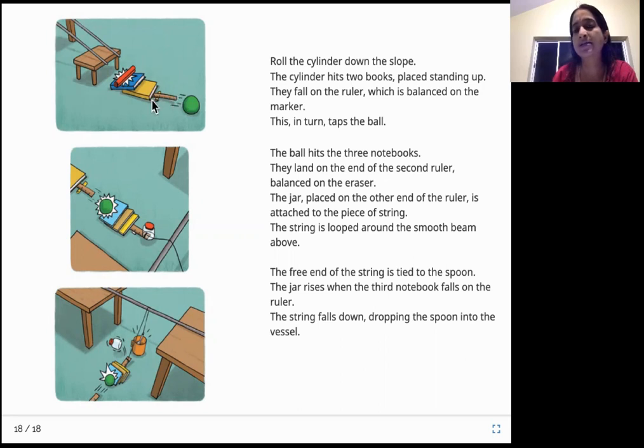What will it fall on? Fall on a ruler. Ruler is a scale. How is the scale placed? It's like a seesaw. Underneath is a marker. So when the book falls on one end of the ruler, the other end has the ball. So the ball will fall down and start rolling. And the ball will go hit the series of notebooks that are kept. The notebooks will fall down. So what will the notebooks fall down on? On another ruler underneath it is an eraser. You can keep anything that you have in hand. So this is just an example. So here they've kept an eraser.